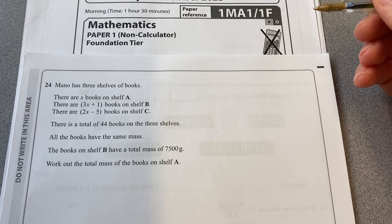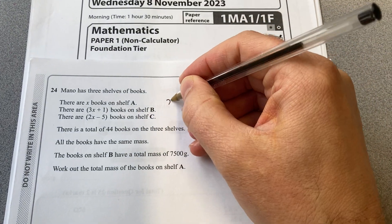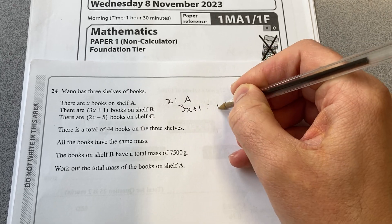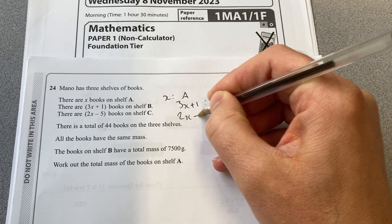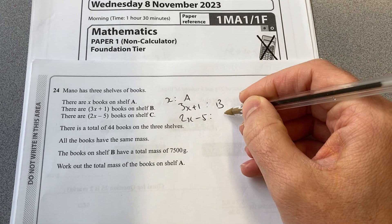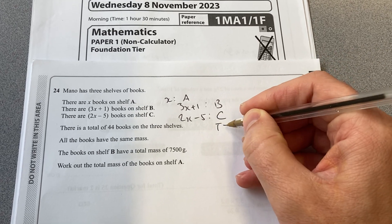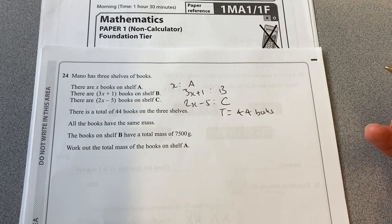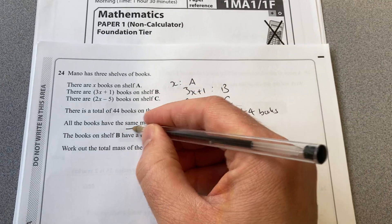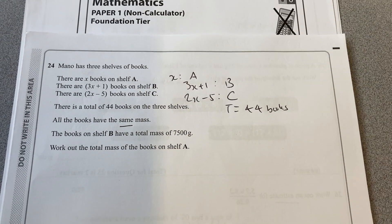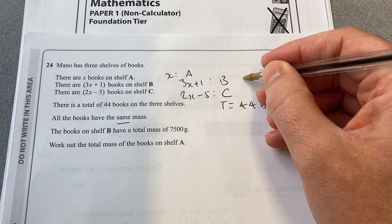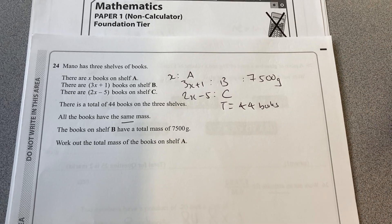So Mano has three shelves of books. There are X books on shelf A, there are 3X plus 1 on shelf B, and there are 2X minus 5 books on shelf C. The total is 44 books on three shelves. All books have the same mass, and the books on shelf B have a total mass of 7,500 grams.